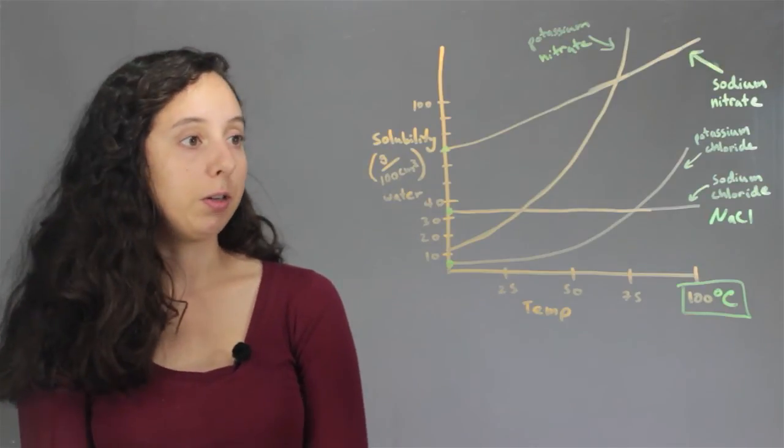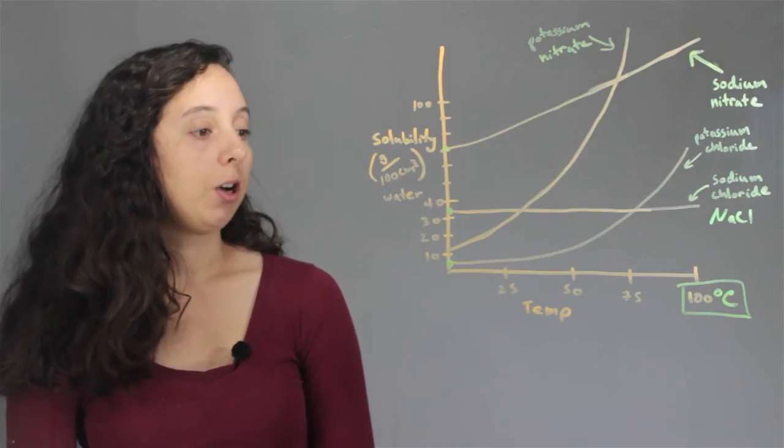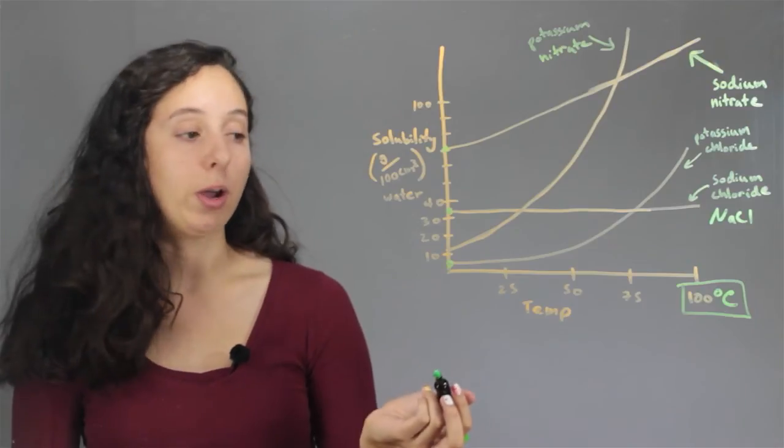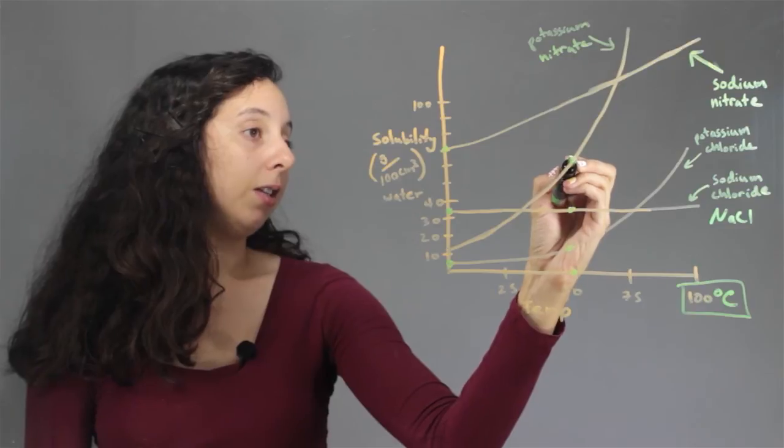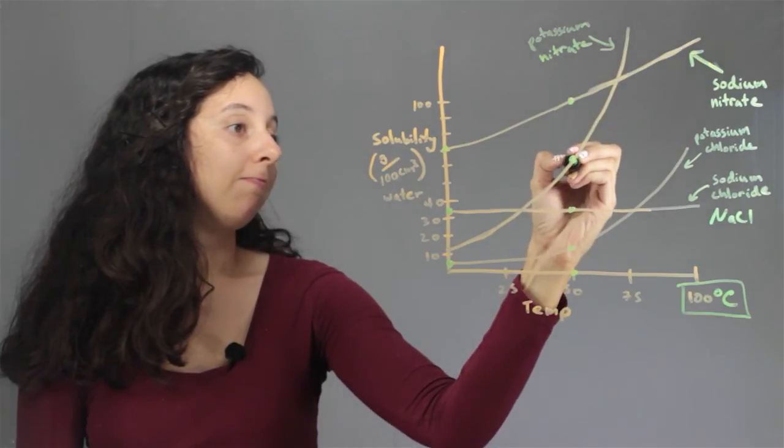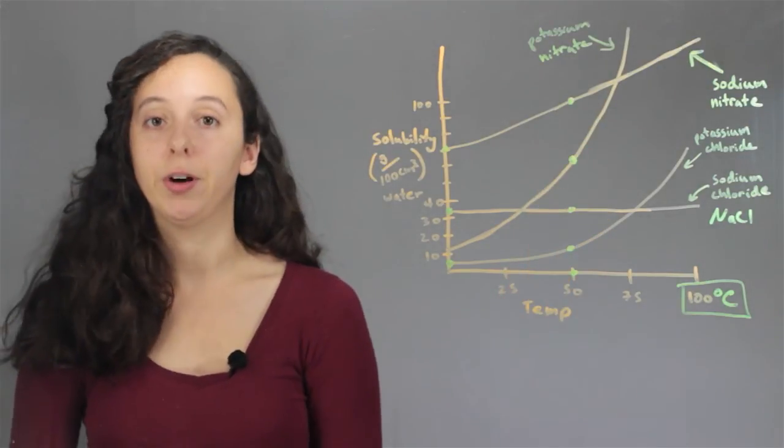And so this is pretty much all you have to do. And so if we want to pick a specific point, we just pick 50 and look at our four different solubilities. We can pick any point we want to.